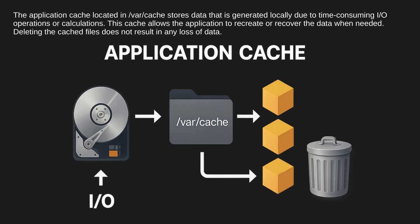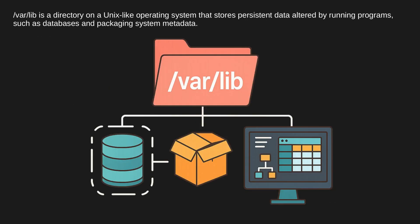The application cache located in /var/cache stores data that is generated locally due to time-consuming I/O operations or calculations. This cache allows the application to recreate or recover the data when needed. Deleting the cached files does not result in any loss of data. /var/lib is a directory on a Unix-like operating system that stores persistent data altered by running programs, such as databases and packaging system metadata.